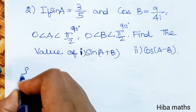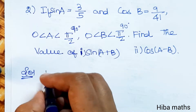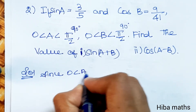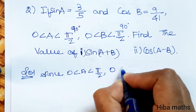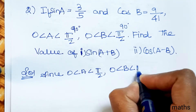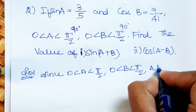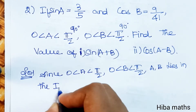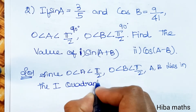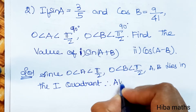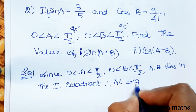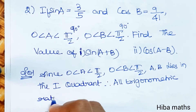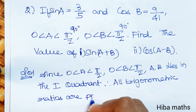First, the solution. Since A is greater than 0 and less than pi by 2, and B is greater than 0 and less than pi by 2, angles A and B lie in the first quadrant. Therefore, all trigonometric ratios are positive.